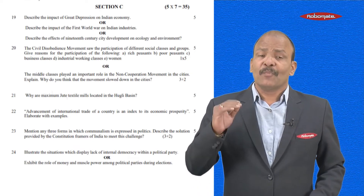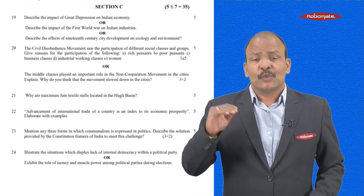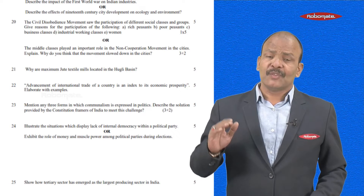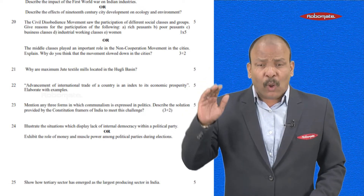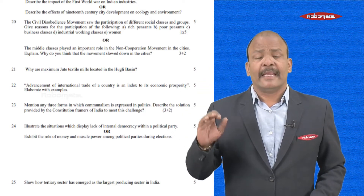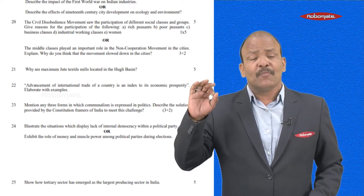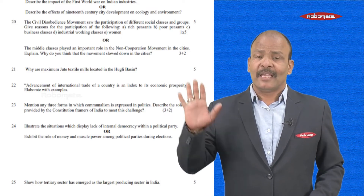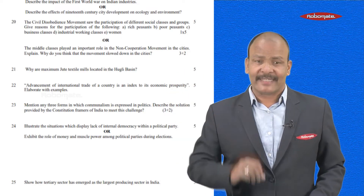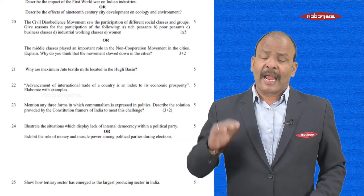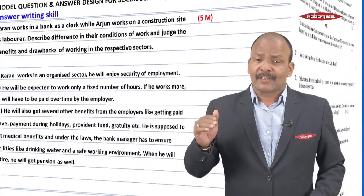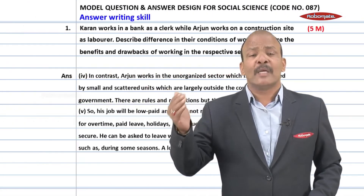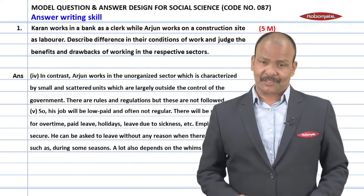Going to the next section - Section C - the questions will be from 19 to 25. In this, all the questions carry five marks each, so your answer must be in five sentences and should not exceed more than 100 words.